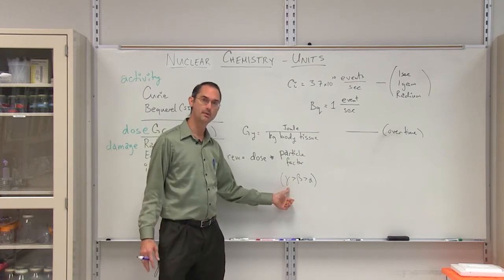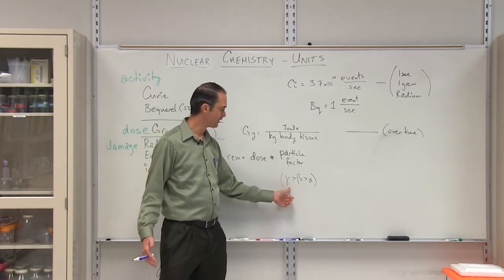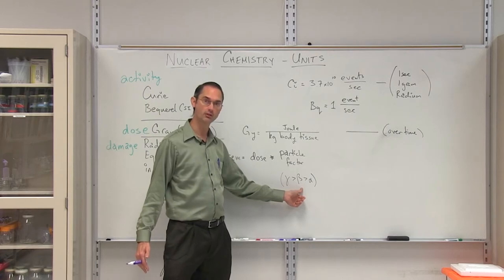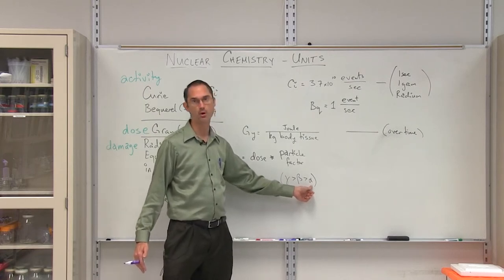Gamma is the strongest, and we'll learn about why in a future lecture. Beta is second strongest. Those are electrons. And then the third strongest will be the alpha particles.